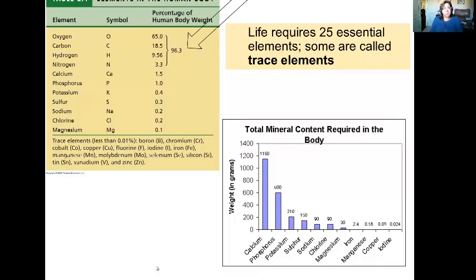So of those Big Four, 96% of your body is made up of Hydrogen, Nitrogen, Oxygen, and Carbon. And then the other remaining elements that make up your body, you can see some of those listed here.